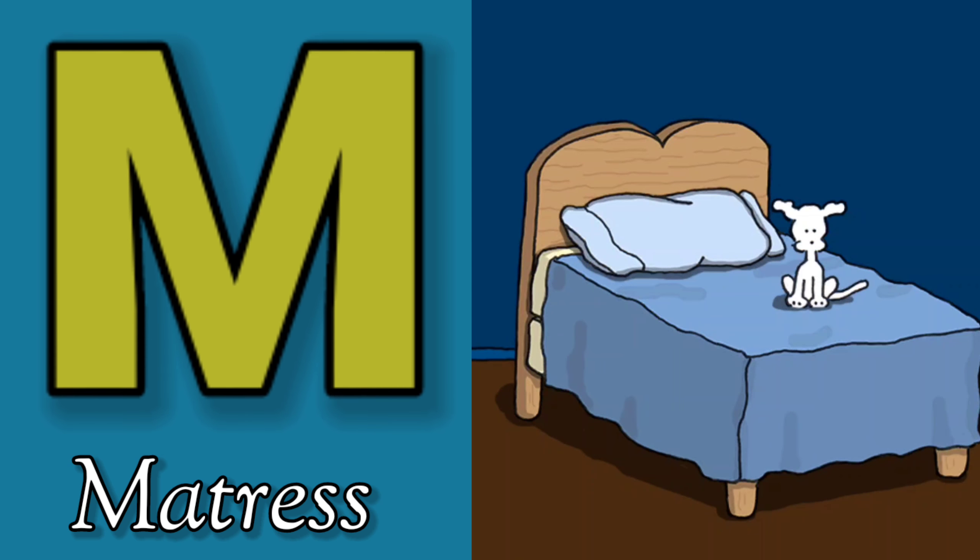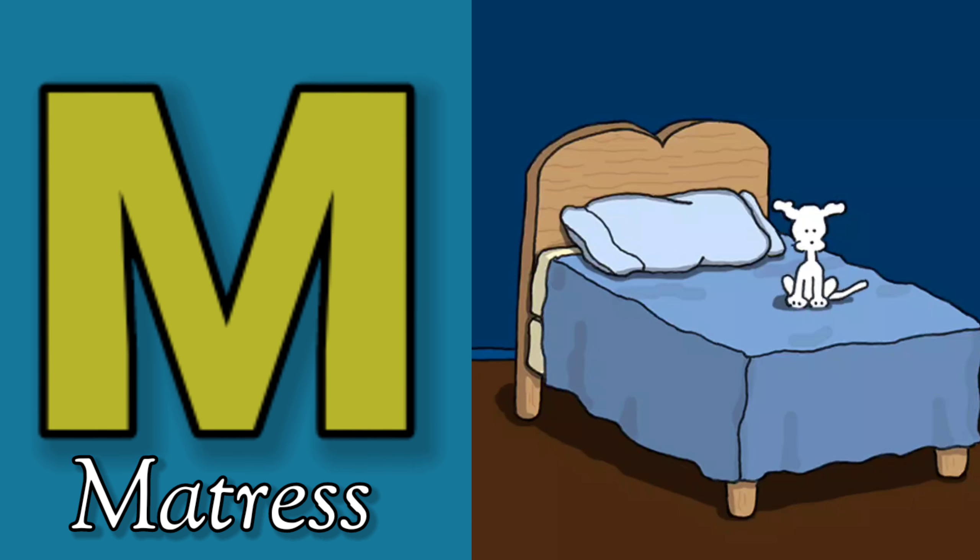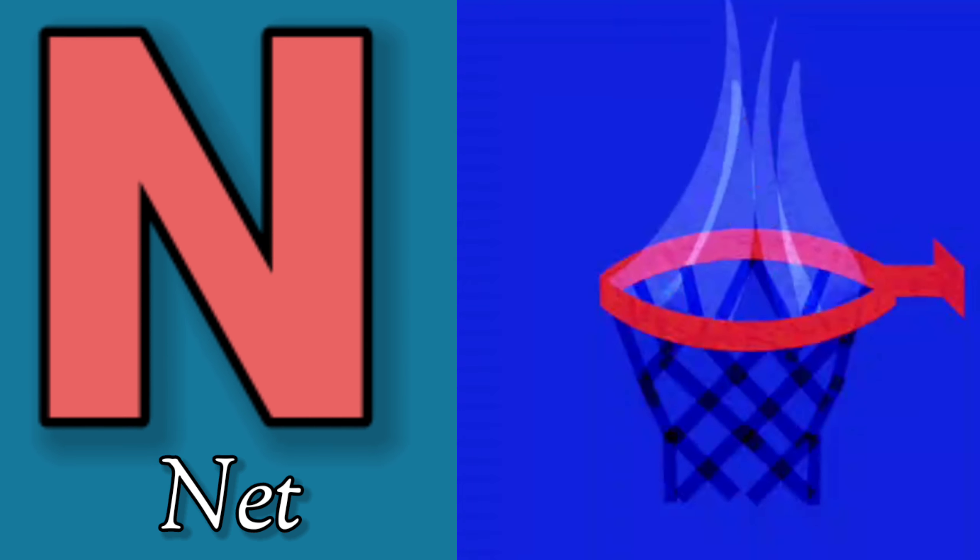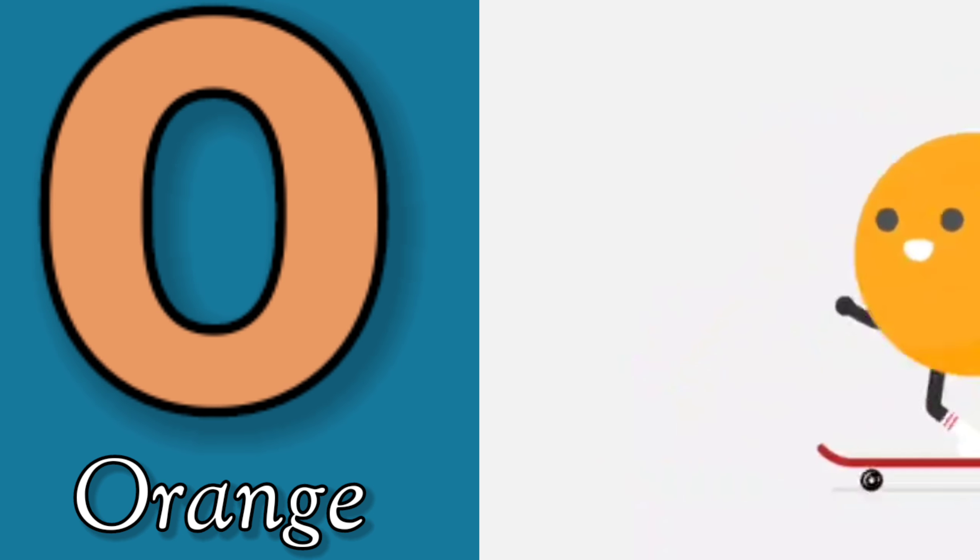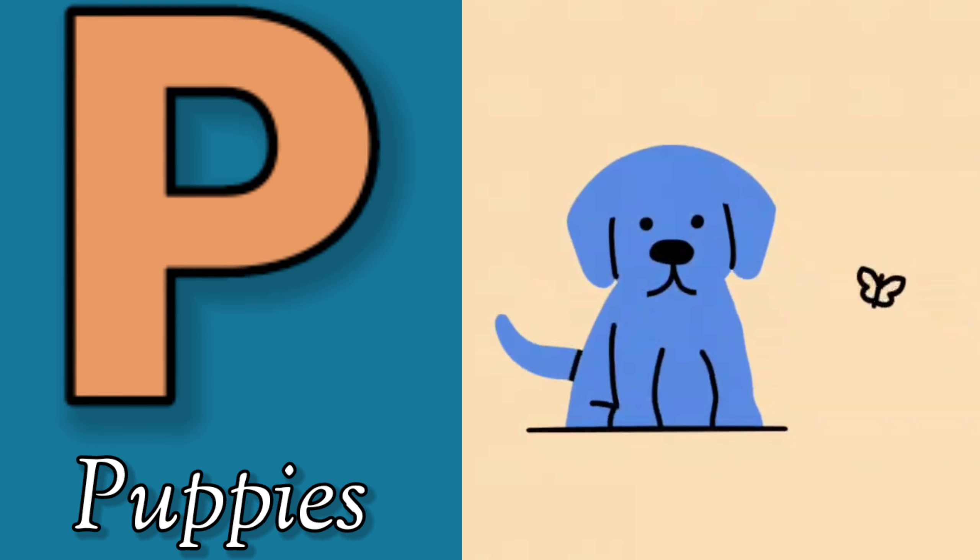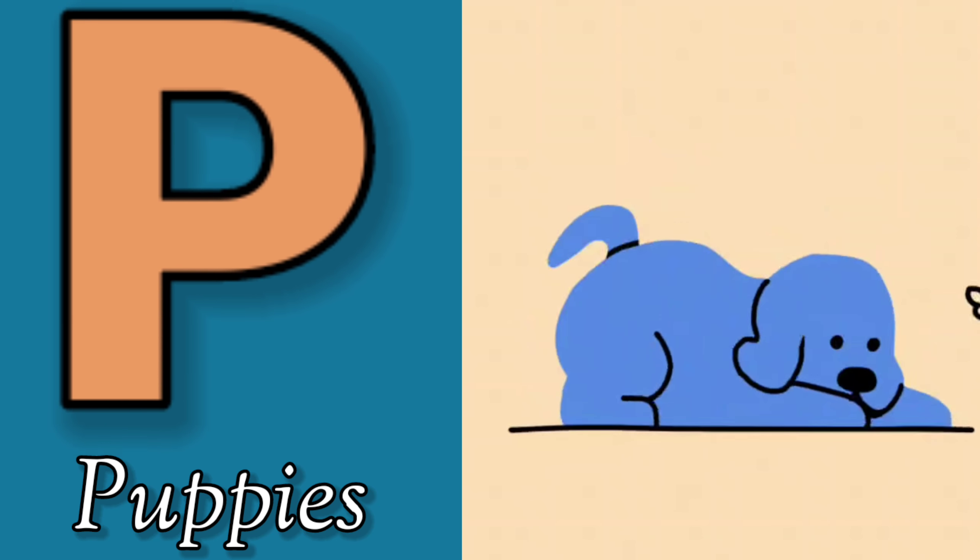M is for Mat, M-M-Mat. N is for Net, N-N-Net. O is for Orange, O-O-Orange. P is for Pet, P-P-Pet.